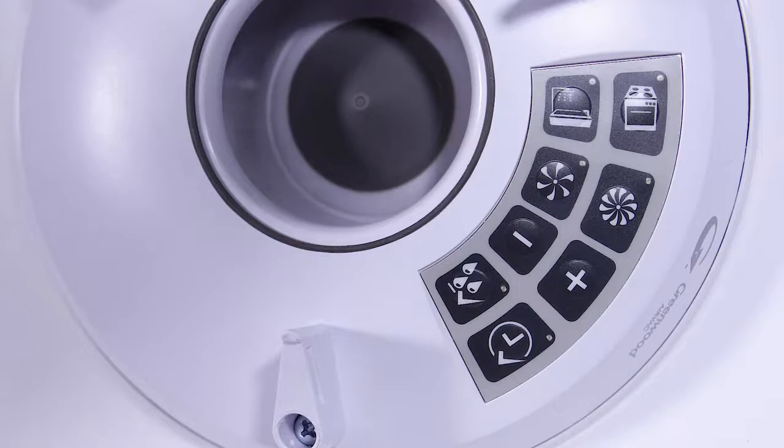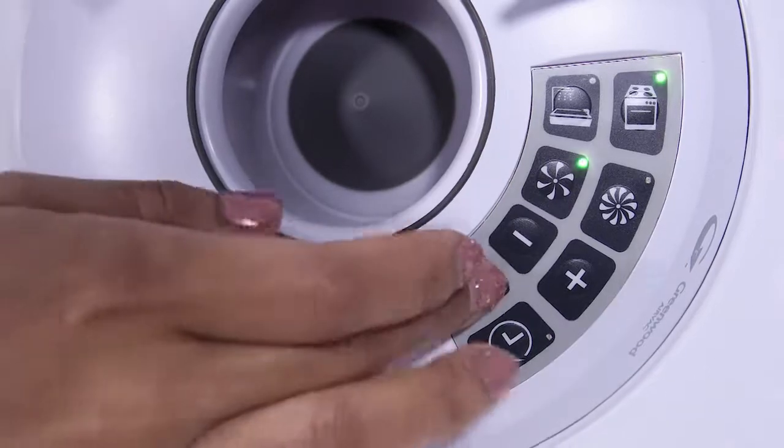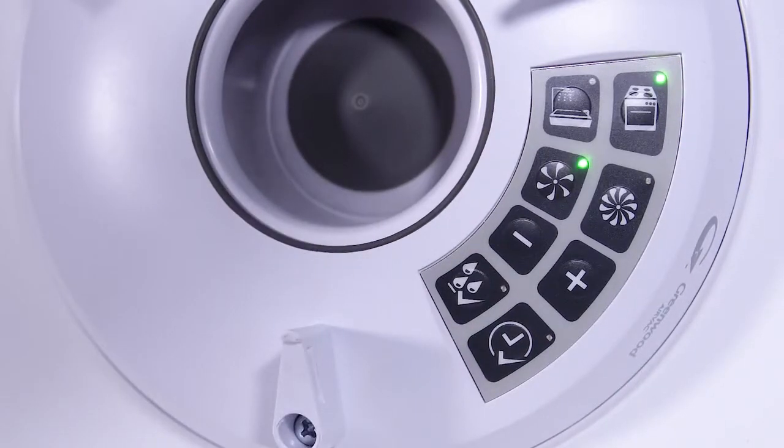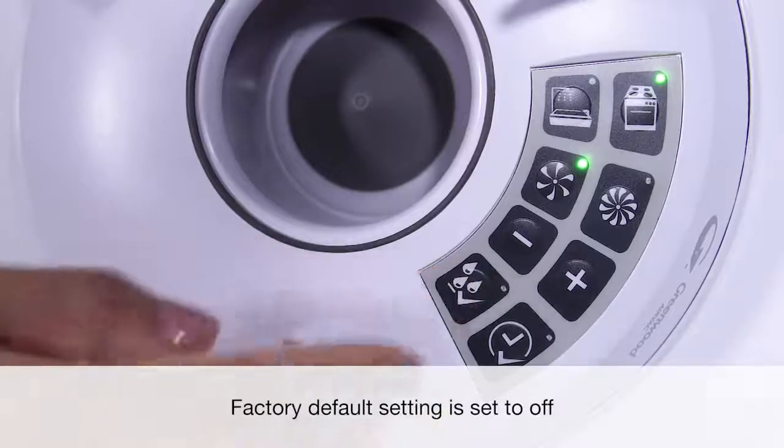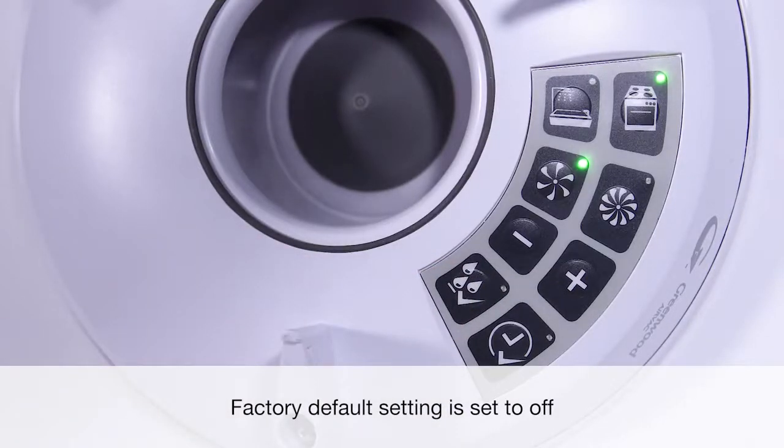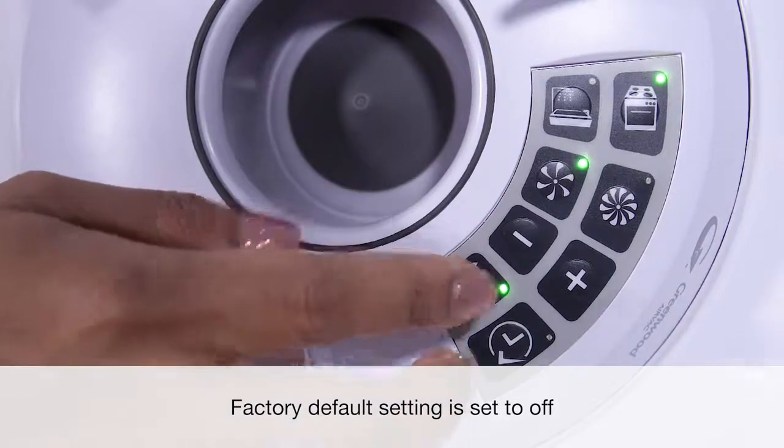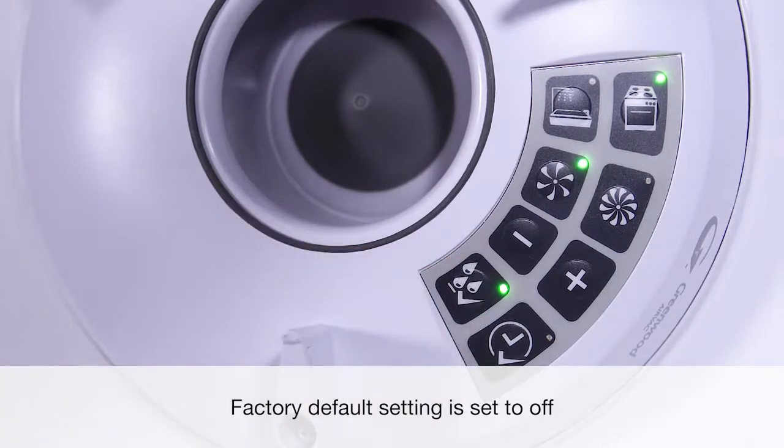To identify current fan status, press any button to activate the panel. Upon identification of control status, either press HumidiSmart to activate or deactivate the HumidiSmart function. Note, the lights should come on to indicate that the function is active. The factory default setting is set to off.